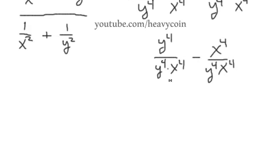So we want to get this to one single fraction here. We've got y to the 4th minus x to the 4th over y to the 4th and x to the 4th. That takes care of the numerator.